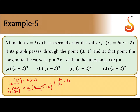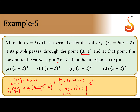We get dy/dx = 3(x-2)² + C. Now, dy/dx is 3 (the slope from the tangent equation). So: 3 = 3(3-2)² + C, which gives 3 = 3(1) + C, and therefore C = 0.